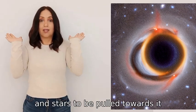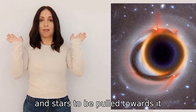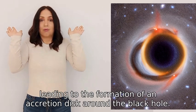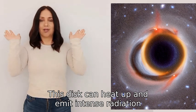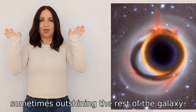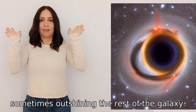This leads to the formation of an accretion disk around the black hole. This disk can heat up and emit intense radiation, sometimes outshining the rest of the galaxy.